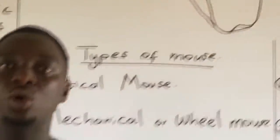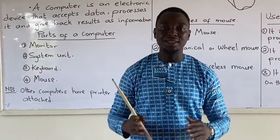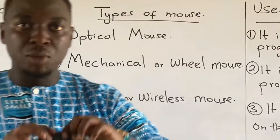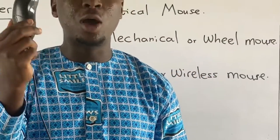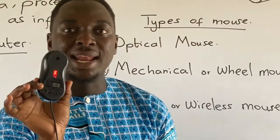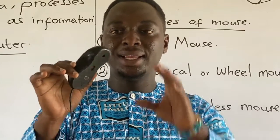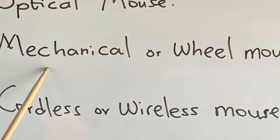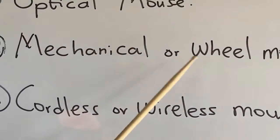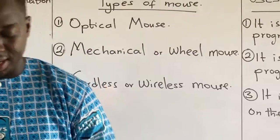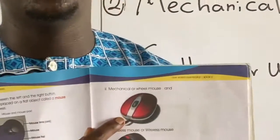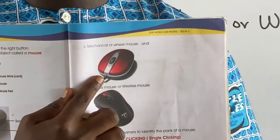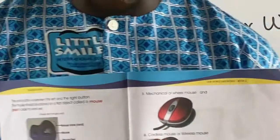Let's look at the types of mouse. One, we have the optical mouse. This mouse I'm holding is a clear example of an optical mouse — it has no ball under it, but rather a light; it uses light to work. Two, we have the mechanical or wheel mouse. It has a round ball under it and doesn't use light to work. In the early days, this was the common mouse people used.